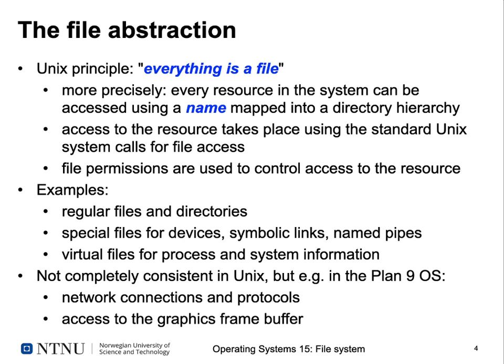Examples of things represented by a file in Unix include regular files and directories — you can open a directory like a file and read its contents. We've already seen special files for devices. We have symbolic links, which are just references to a different name in a file system, giving an object in your file system a different name that also lives in a different directory. We've also seen named pipes in our discussion of inter-process communication. And we can have virtual files that provide information about the current state of our processes and operating system.